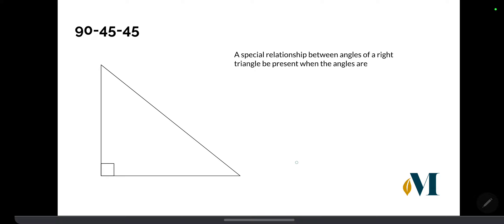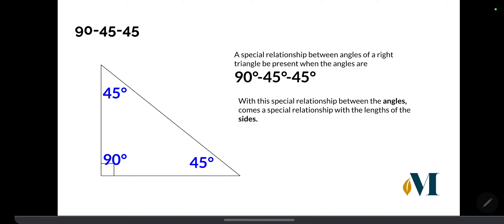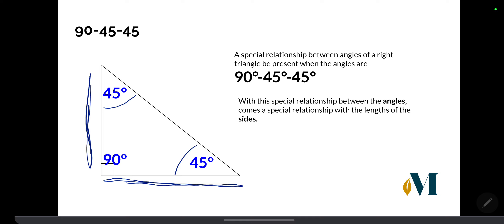A special relationship between the angles of a right triangle occurs when the angles are 90 degrees, 45 degrees, and 45 degrees — hence why we call it a 90-45-45 right triangle. With that special relationship between the angles comes a special relationship between the sides. This 45-degree angle here corresponds with this leg, and the other 45-degree angle corresponds with the other leg. If the angles are congruent, then we also have congruent sides.